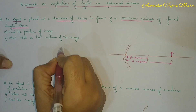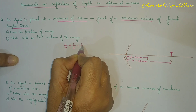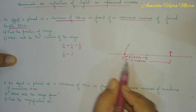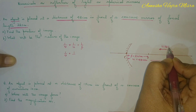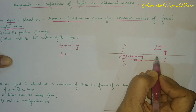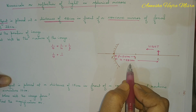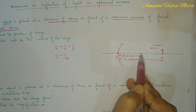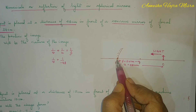Let us find out using the mirror formula: 1/V + 1/U = 1/F. I need to find V. The object distance U is measured from the pole — if you go from the pole to the object, you are going against the direction of light, so U is negative, that is minus 48 centimeters.